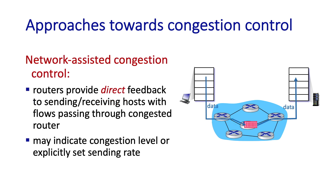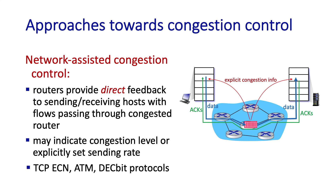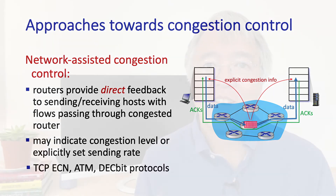In the second approach, the network layer provides explicit feedback to the transport layer indicating congestion, and this can happen before there's actually loss or excessive delay. This feedback can be provided in several different ways. Some more recent versions of TCP implement network-assisted congestion control together with TCP's original end-to-end congestion control.